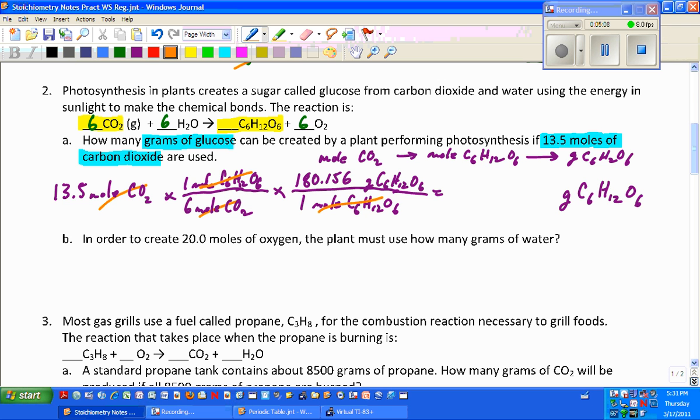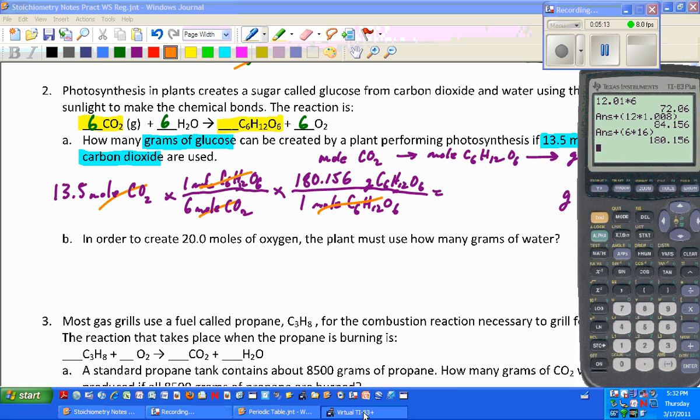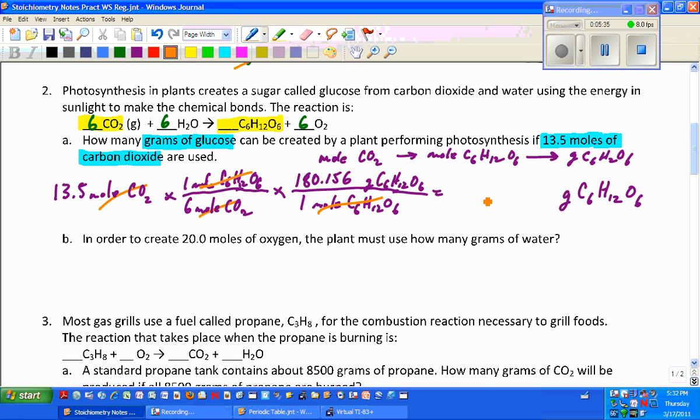My moles of sugar cancel, I've got grams, it agrees with what I was looking for. I'm ready to go ahead and calculate, so I've got 13.5 times 180.156, enter and then divide by six, and again I need three sig figs so that's going to be 405 grams of that sugar glucose.